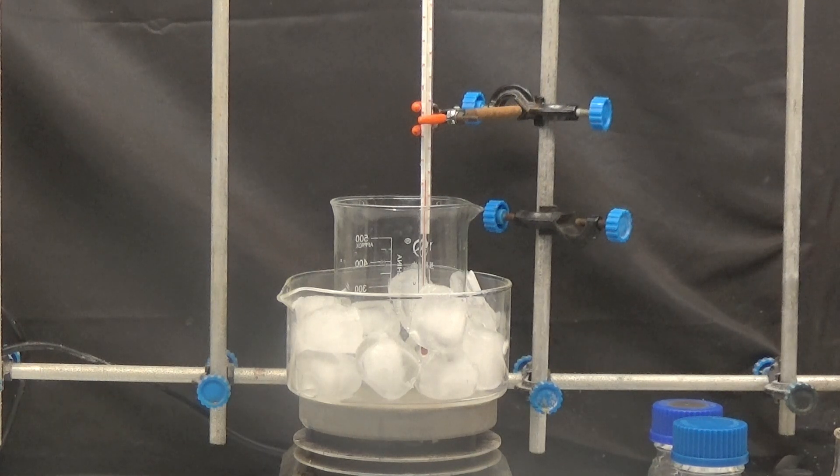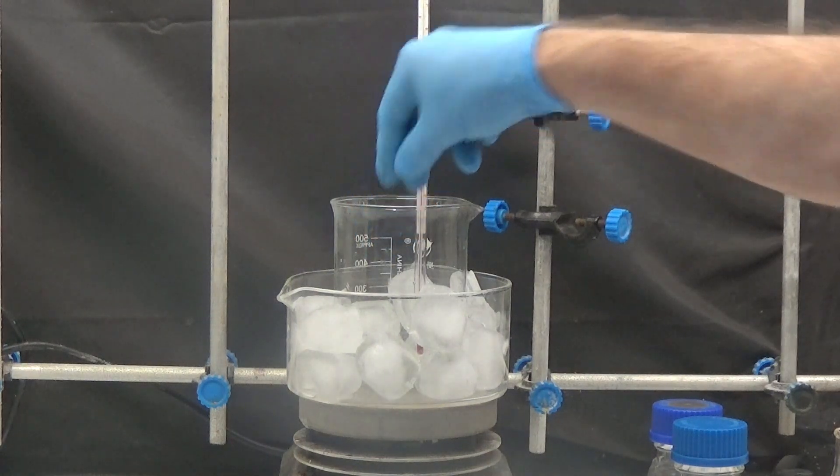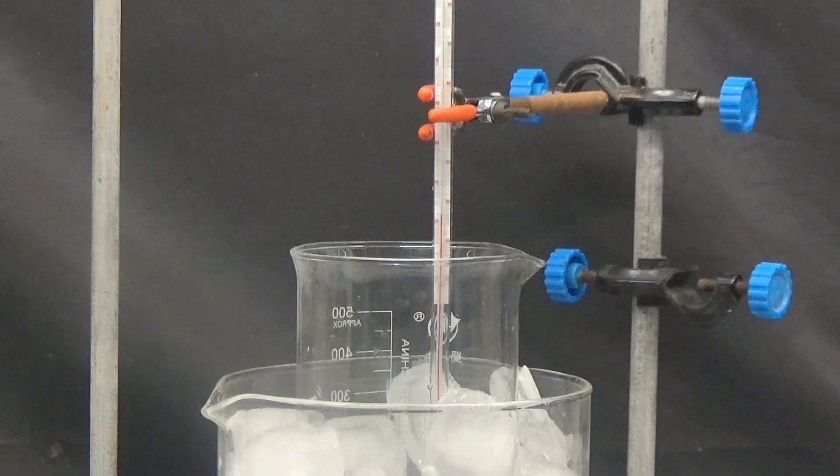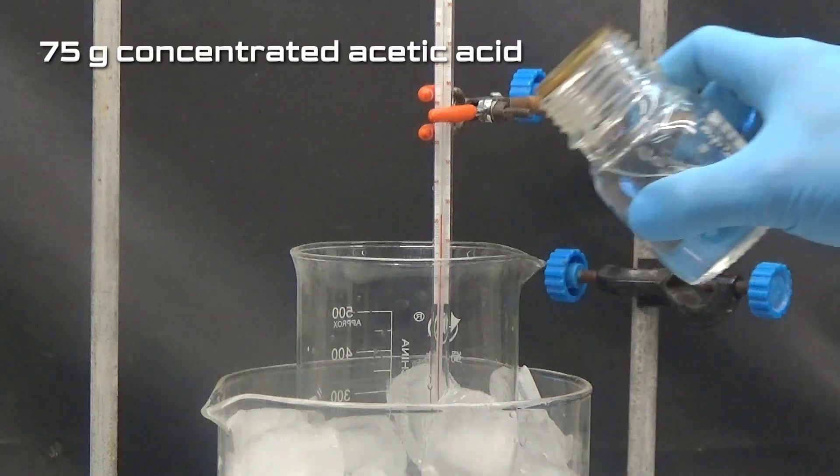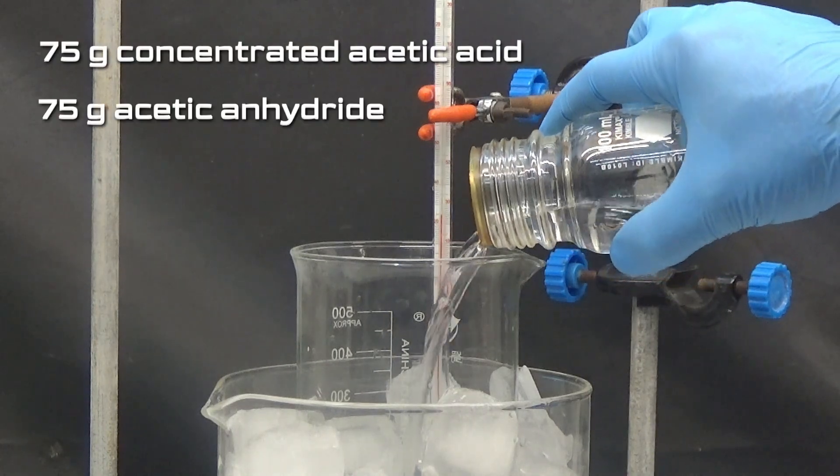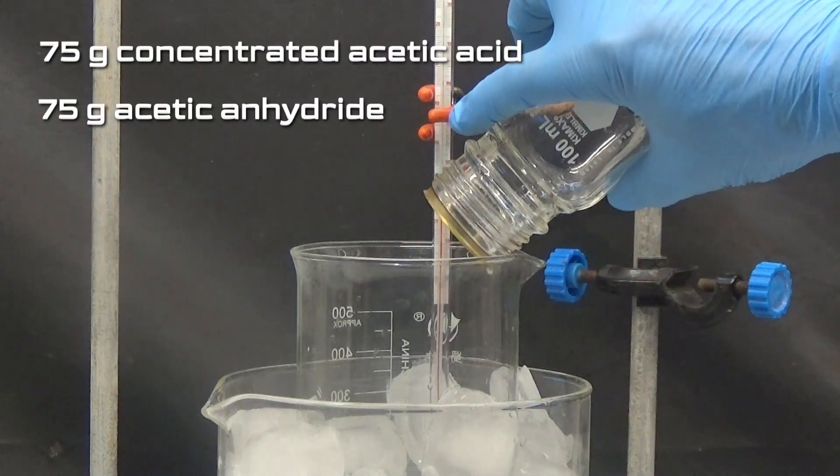To proceed with this synthesis, we will start with the oxidation of the methyl group. In a 500ml beaker with a thermometer and surrounded by an ice bath we put 75g of concentrated acetic acid, 75g of acetic anhydride,